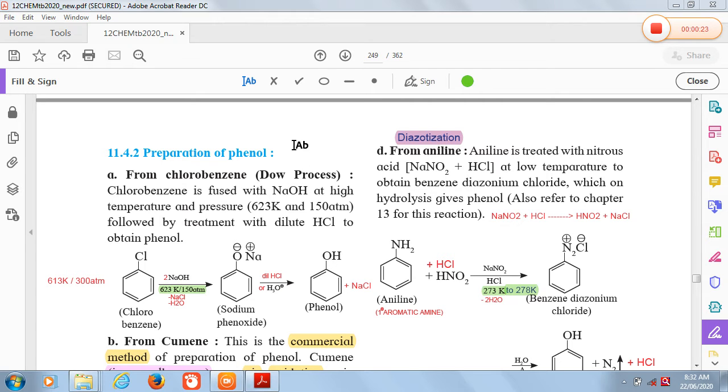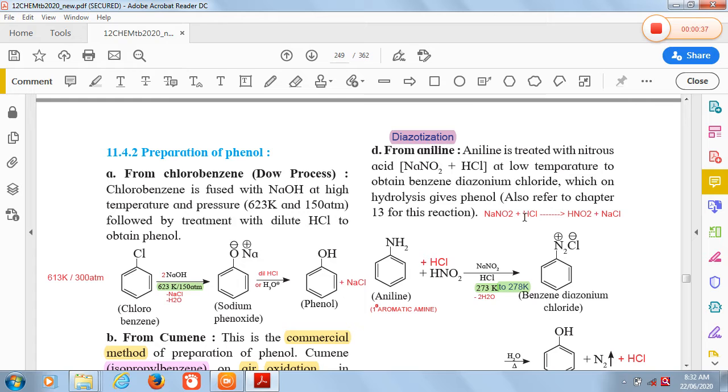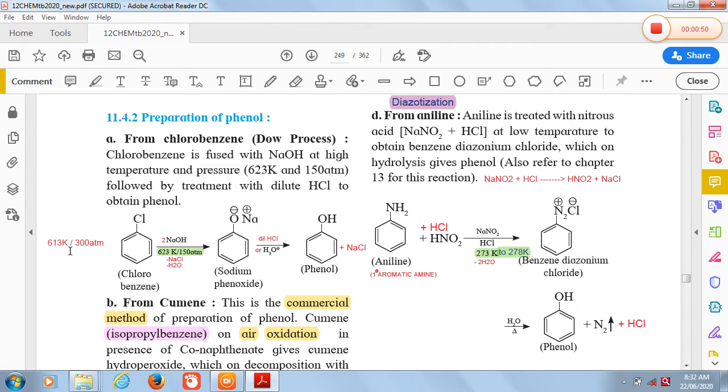When chlorobenzene is fused with alkali such as NaOH at high temperature and pressure, the temperature and pressure is given as 623 Kelvin and 300 atmospheric pressure. In old syllabus the temperature is 613 Kelvin and pressure is 300 atmospheric pressure, so we have to confirm it and will discuss the correct values later.